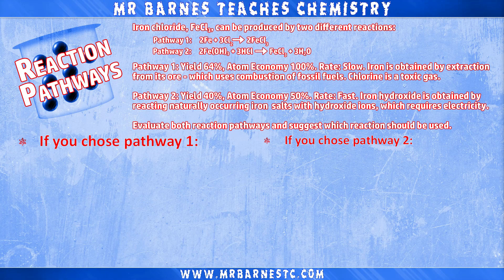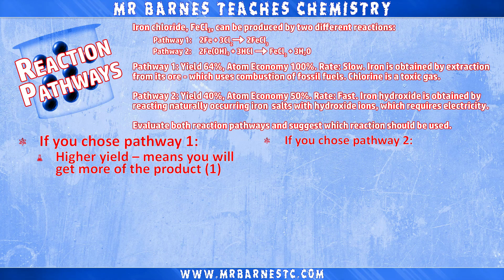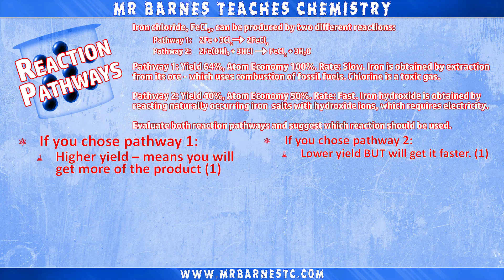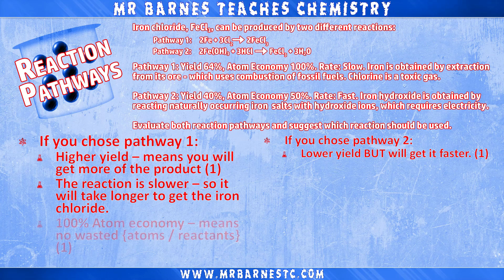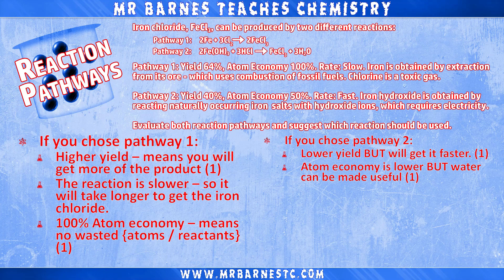Okay, let's go through. Again, there's no right or wrong answer to this as long as you use scientific reasoning. If you chose pathway one, you could say that it has a higher yield than pathway two, meaning you would get more of the product — that would get you a mark. If you chose pathway two, you could say that although it's a lower yield, the reaction is faster so you'll get it quicker. The reverse argument is that pathway one's reaction is slower, so it will take longer to produce your iron chloride. In terms of atom economy, if you chose pathway one, it has a higher atom economy so there are no wasted atoms or reactants. Pathway two has a lower atom economy, but the byproduct is water, which has many uses.